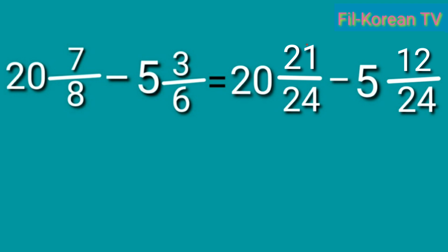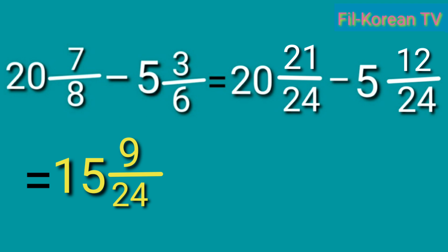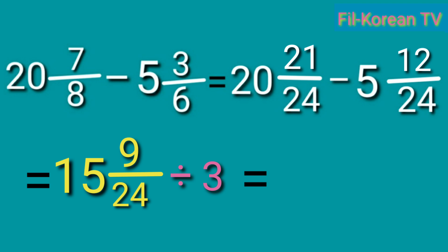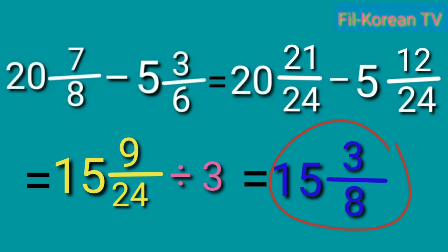Okay, the fractions are now similar fractions, so let's subtract now. Subtract the numerators: 21 minus 12 equals 9. Subtract the whole numbers: 20 minus 5 equals 15. And copy the LCD: 24. The answer is 15 and 9 twenty-fourths. But the fraction 9 twenty-fourths can be reduced to lowest term, because 9 and 24 have a common factor. So, let's divide them by their GCF, which is 3. Copy the whole number 15. Divide the numerator: 9 divided by 3 equals 3. Divide the denominator: 24 divided by 3 equals 8. The answer is 15 and 3 eighths.